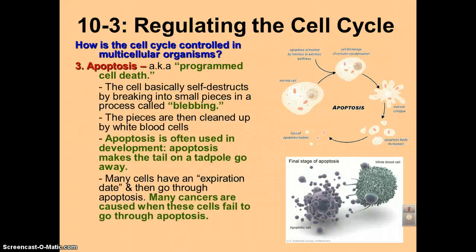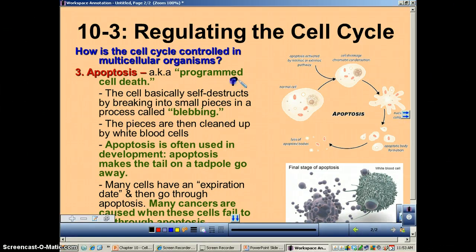The third topic we're going to talk about is apoptosis. This is a really interesting concept — essentially, you need to think of cells as having an expiration date. When they're old and worn out, they will just self-destruct. This self-destructing is called apoptosis, often referred to as programmed cell death, sometimes written as PCD. Apoptosis and PCD are the same thing.